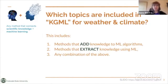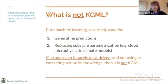Before we jump into this topic of knowledge-guided machine learning for weather and climate, we wanted to talk about what exactly we mean by what is included in knowledge-guided machine learning. We define knowledge-guided machine learning to be any method that connects scientific knowledge and machine learning. This includes methods that add scientific knowledge to machine learning algorithms, but also methods that extract scientific knowledge using machine learning and any combination thereof. What is not KGML? There are hundreds of examples of successful use of machine learning in weather and climate, but most of them are purely data-driven. Pure machine learning is not KGML if the approach is purely data-driven and not using or extracting scientific knowledge.